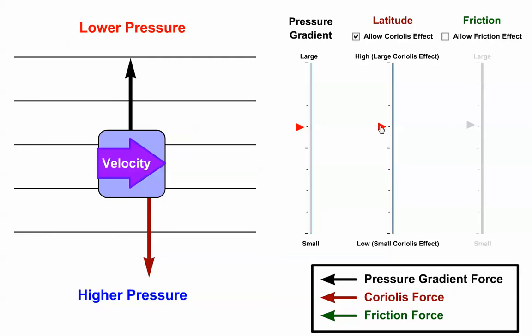The velocity vector gets larger, equating to faster wind speeds at lower latitudes, and gets smaller, equating to slower wind speeds at higher latitudes, all without changing the pressure gradient force.